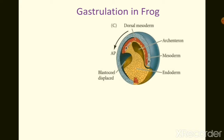Welcome back. In this session we will learn about gastrulation in frog. We are already familiar with the process of gastrulation, whose main target is to form the three germ layers and to displace the cavity of the blastula — the blastocele — by a new cavity called the archenteron.